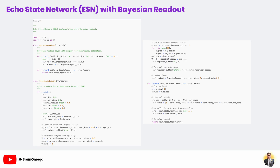In the forward pass, all of this comes together. An input is projected into the reservoir, the internal state is updated and normalized, and the resulting state is passed through the Bayesian readout layer. When we use this model in reinforcement learning, we often make several forward passes for the same input, each with different dropout masks. By averaging these outputs, we get not just a prediction, but also a sense of how confident the model is.